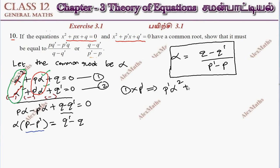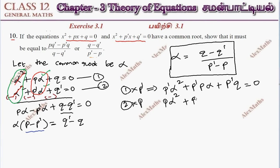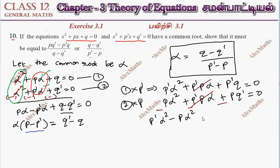Now for the second method: multiply the first equation by p' to get p'·alpha² + p'p·alpha + p'q = 0, and multiply the second equation by p to get p·alpha² + p'p·alpha + p·q' = 0. If we subtract, the middle term cancels, giving (p' - p)·alpha² plus p'q minus p·q' = 0.